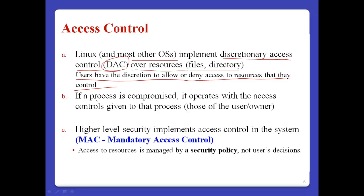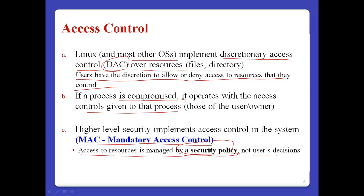But if a process is compromised, it operates with the access control given to that process. The higher level of security implements access control in the system — normally we call it MAC, mandatory access control. In MAC, access to resources is managed by security policies, not users.